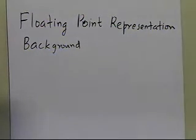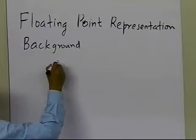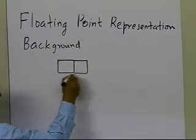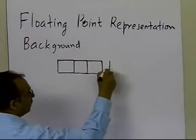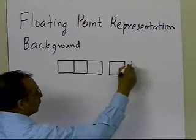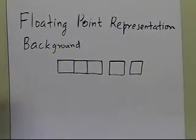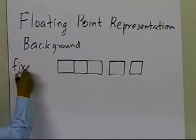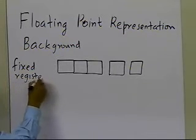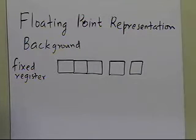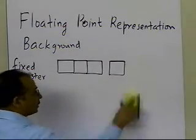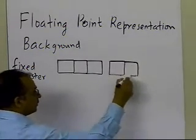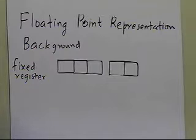What I would like you to do is go back a little bit in time, where you used to have cash registers which would have maybe three places for the dollar, and two places for the cents. This is what we call a fixed register. You have so many places for the integer part of a number, and then you have so many places for the decimal part of the number, which is the cents, for example.